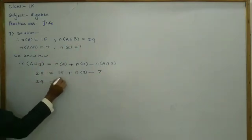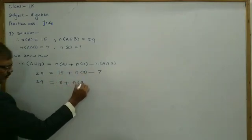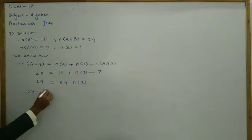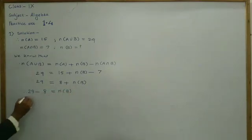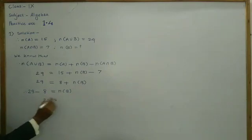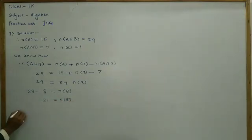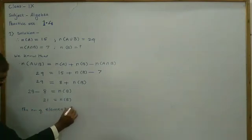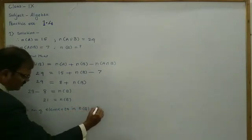So, 29 is equal to 15 minus 7, we get 8, plus n(B). Therefore, 29 minus 8 is equal to n(B). So by subtraction, we get 21 is equal to n(B). Therefore, the number of elements in n(B) is equal to 21.